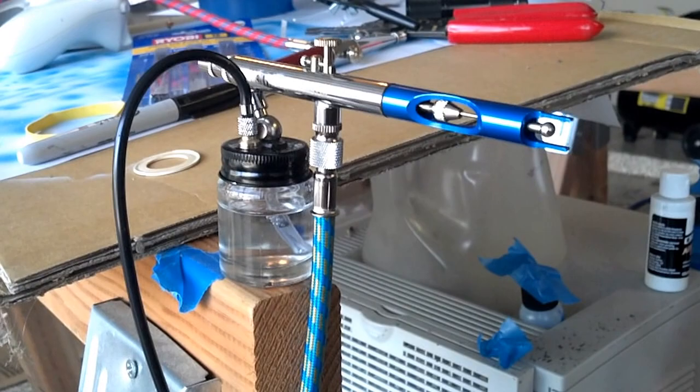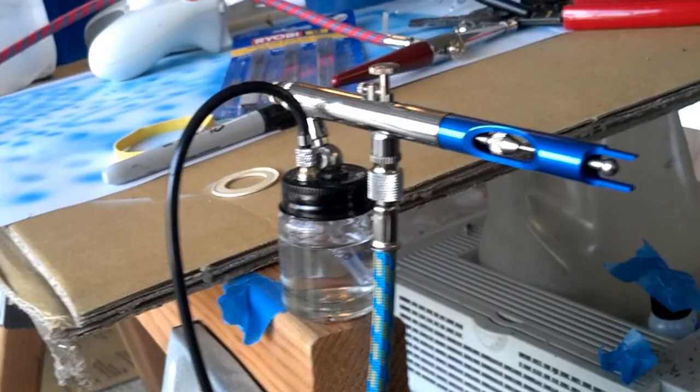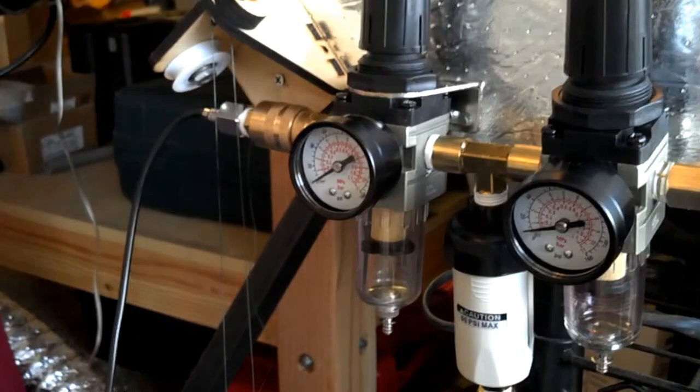This is a test of the pressurized paint delivery on a dual action airbrush. This is a Harbor Freight deluxe edition dual action airbrush. It's being fed by two pressure regulators, one which doesn't even really read the pressure level on the paint bottle.